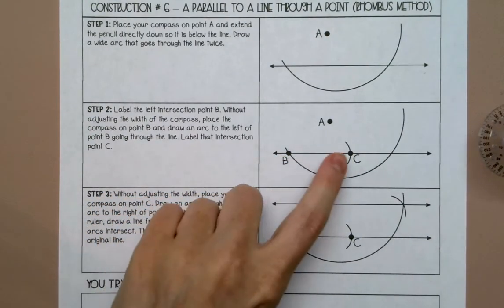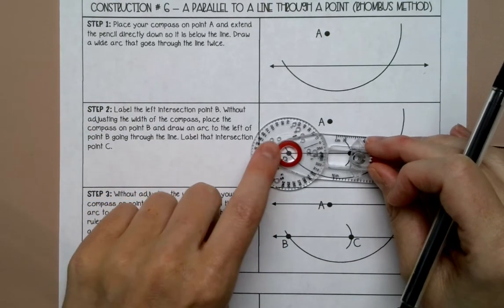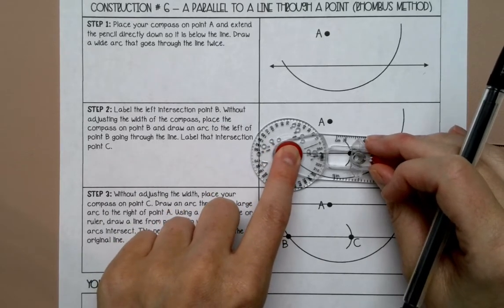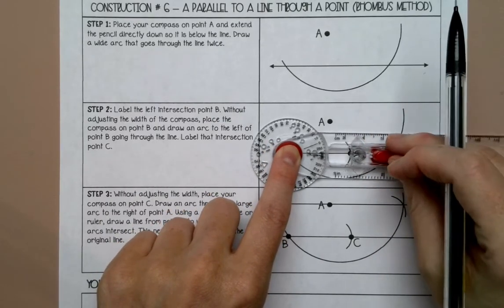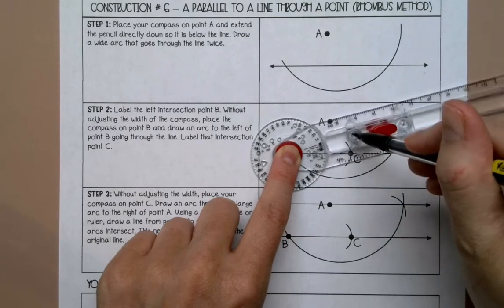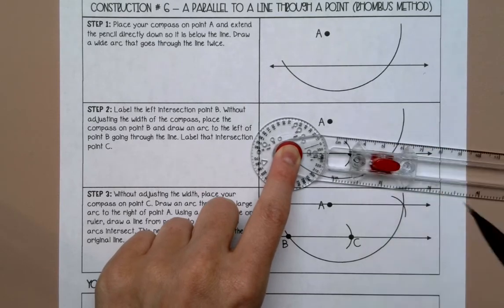Then you're going to label this B. Put your compass on B and draw an arc to the left of your line without adjusting the width.